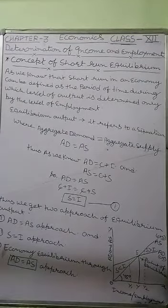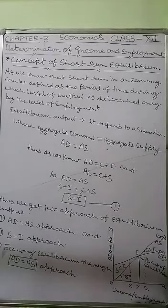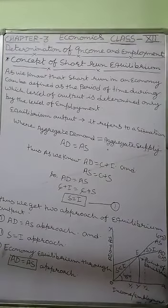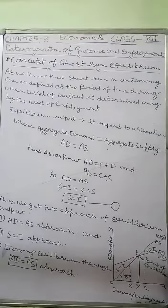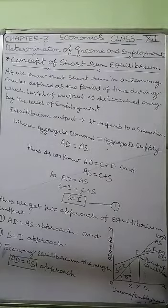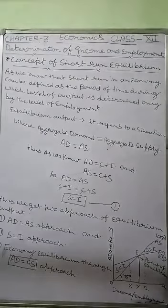Good morning students of Satya Vidya Mandir, Commerce Section. We are running in Chapter 3, Determination of Income and Employment. So far we have studied consumption, consumption function, saving, saving function, the concept of aggregate demand and aggregate supply, and their components — consumption, investment, and saving.